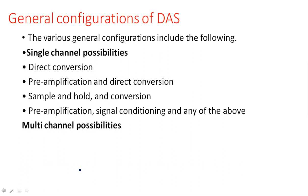The next single channel possibility is the sample and hold circuit followed by conversion. The sample and hold circuit takes the signal, samples it for some time, and then holds the signal. It collects and holds the signal — in this way a sampled signal can be generated. It cuts the signal into a number of pieces, and during reconstruction, sample and hold is performed.